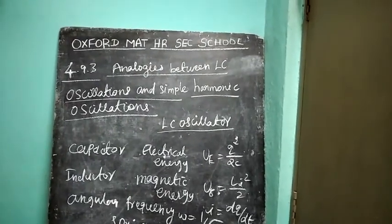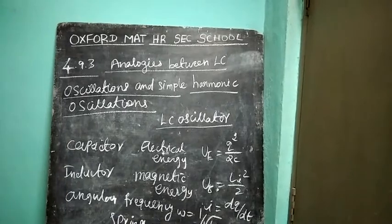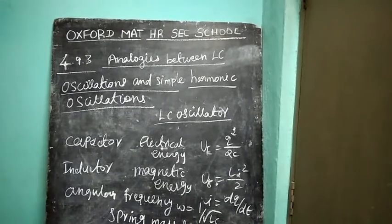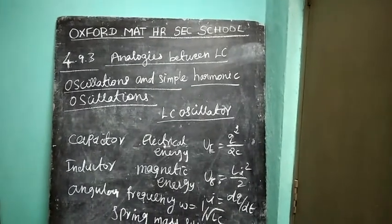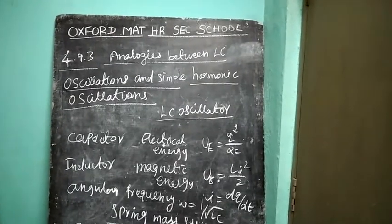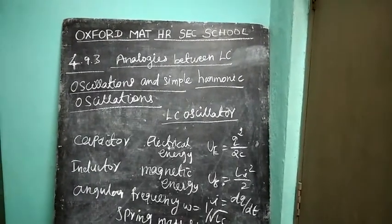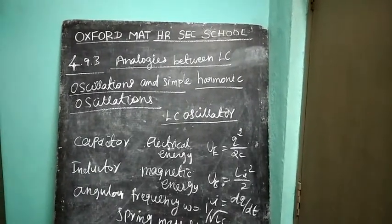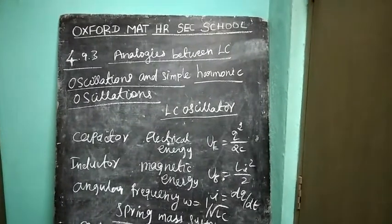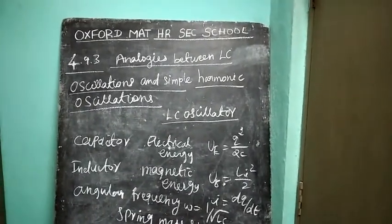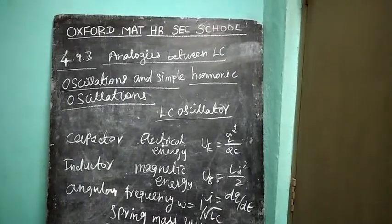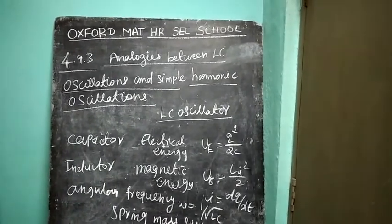Electromagnetic energy in LC oscillations exists in two forms: electric energy of the capacitor, UE equal to Q squared by 2C, and magnetic energy of the inductor, UB equal to L times I squared by 2.